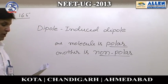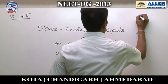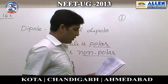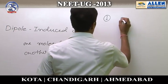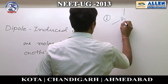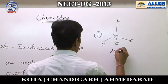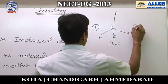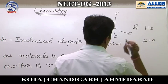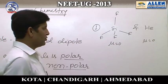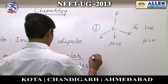Let us take one option at a time. Option number one is SiF4 and He atom. SiF4 has tetrahedral symmetrical geometry, so it is non-polar. He is a simple atom, also non-polar. Since both are non-polar, this option can be neglected.